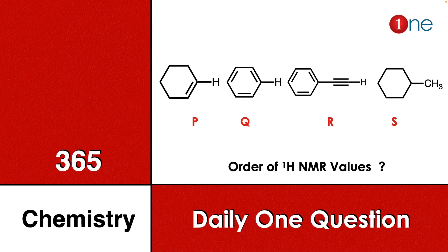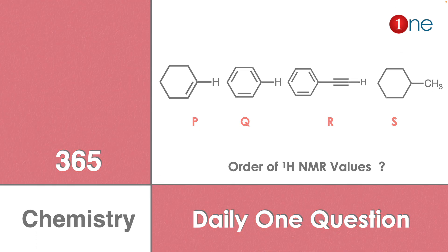Welcome to One Chemistry. This is the 365 Chemistry Series — daily one question for you. Here, four different hydrogen atoms are given: P is cyclohexene, Q is benzene, R is an alkyne attached with benzene, and S is cyclohexane with a methyl group. You have to arrange them by their NMR values.